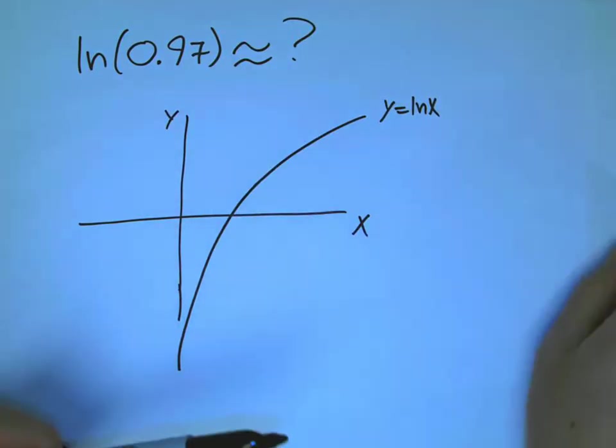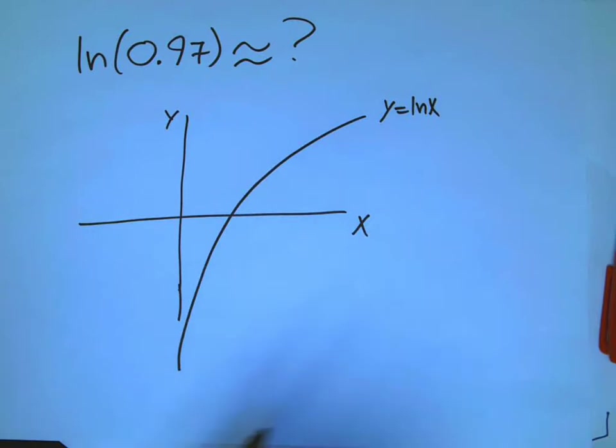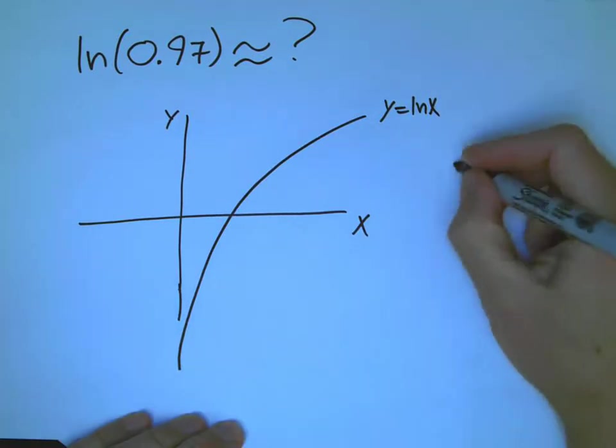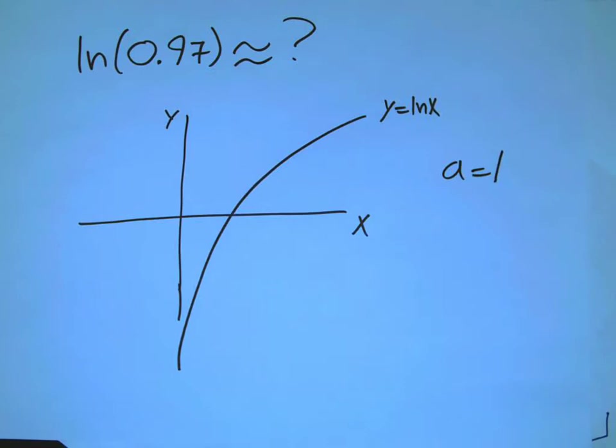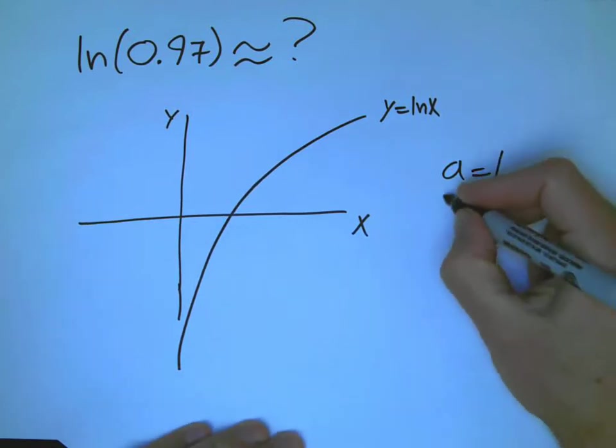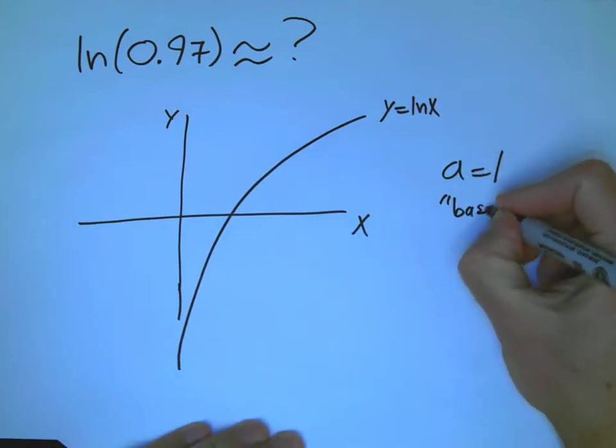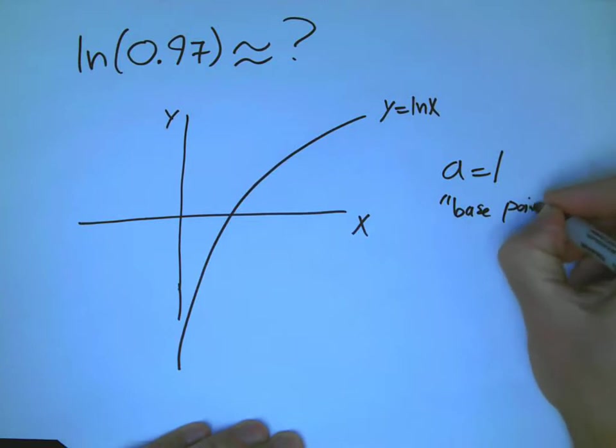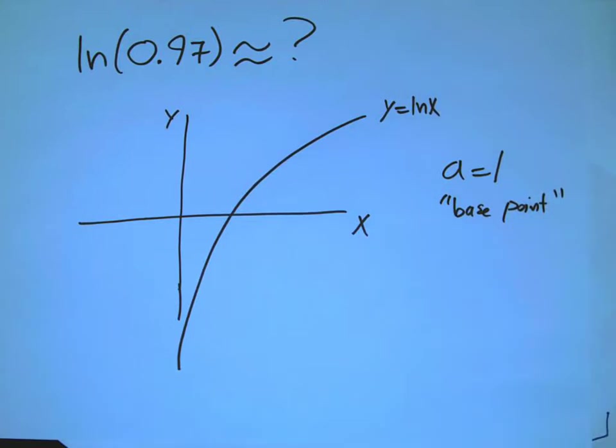And even though it's hard to get ln 0.97 directly, we're going to look, we're going to set a equals 1. And a is going to be our name for a simple base point, kind of a home, easy home base to look at.